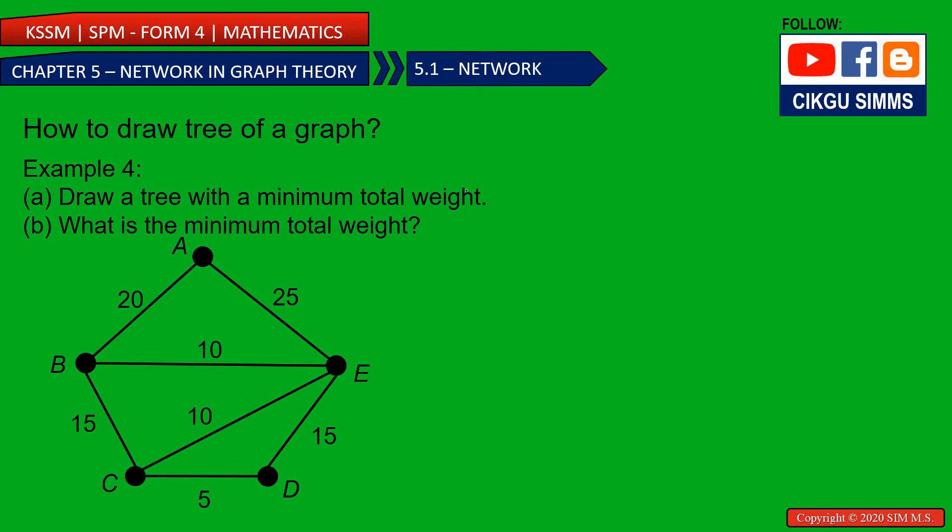Example 4. Draw a tree with a minimum total weight. So what is the minimum total weight? Let's draw the tree first. So A, B, C, D, and also E. A, B, C, D, and also E. So you need to connect all of them. This is 5 vertices. You need to connect using 4 lines or 4 edges. So 4 lines. How do we choose 4 lines?